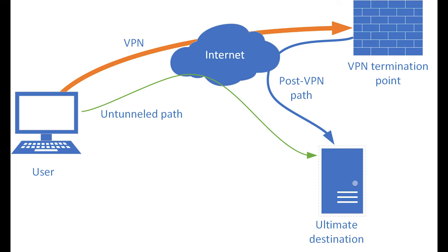VPN features split tunneling and full tunneling. Full tunneling means using your VPN for all your traffic, whereas split tunneling means sending part of your traffic through a VPN and part of it through an open network. Full tunneling is more secure than split tunneling because it encrypts all your traffic rather than some of it. However, split tunneling is good for speed.